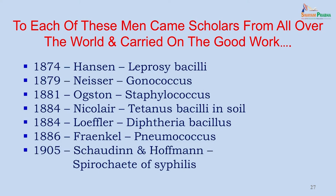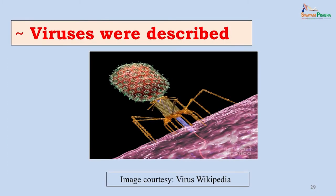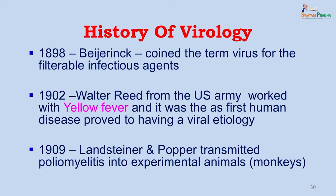Scholars from all over the world carried on this good work, and over the next decade many organisms causing the common diseases of that time were discovered — almost all the causative agents of bacterial diseases could be identified. Further advances in science led to the discovery of even smaller pathogens than bacteria. In 1934, Ernest Ruska introduced the electron microscope, and henceforth viruses were described because we could now see them. Beijerinck coined the term 'virus' for filterable infectious agents. The first pathogenic virus was described by Walter Reed, who showed that yellow fever was caused by a virus. In 1909, Landsteiner and Popper transmitted poliomyelitis into experimental animals and proved Koch's postulates on the poliovirus.